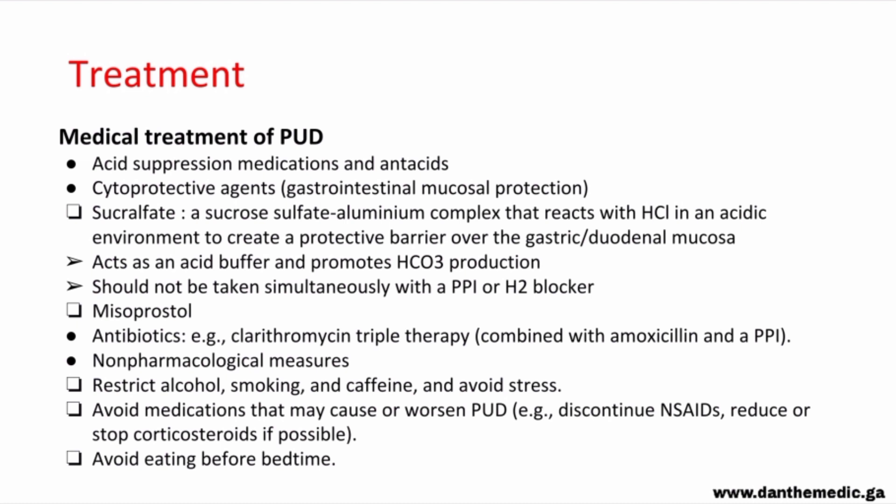Cytoprotective agents include sucralfate — a sucrose sulfate aluminum complex that reacts with hydrochloric acid to create a protective barrier over the gastric or duodenal mucosa, acts as an acid buffer, and promotes bicarbonate production. It should not be taken simultaneously with proton pump inhibitors or H2 blockers. We also have misoprostol, a synthetic prostaglandin E1 analog. Antibiotics like clarithromycin triple therapy (combined with amoxicillin and proton pump inhibitors) are used when H. pylori is confirmed.